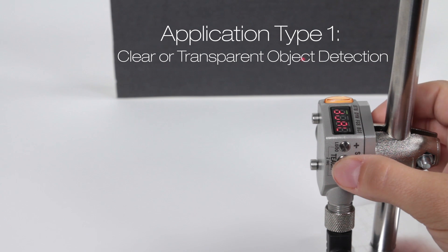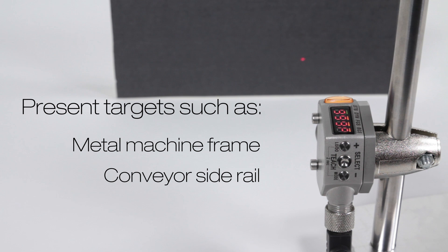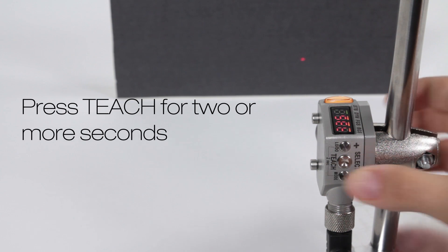For clear or transparent object detection, present a steady reference target such as a metal machine frame, conveyor side rail or a mounted plastic target. Press the teach button for two or more seconds to begin dual teach mode.